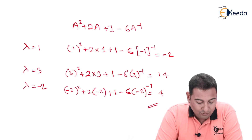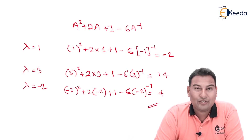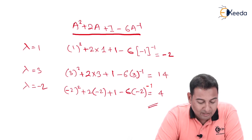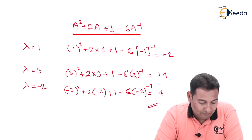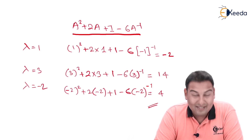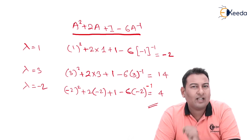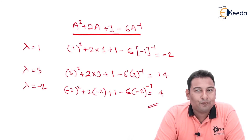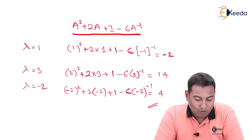So the eigenvalues are minus 2, 14, and 4 corresponding to λ = 1, λ = 3, and λ = −2 respectively. What students generally do is manually compute the matrix A² + 2A + I − 6A⁻¹ and then find its eigenvalues — but instead, we just need to use the properties of eigenvalues directly.